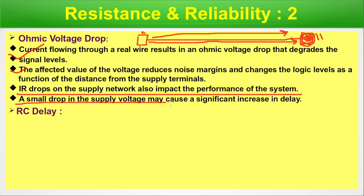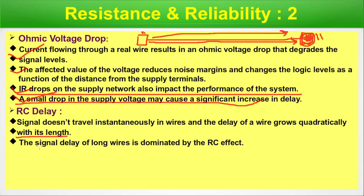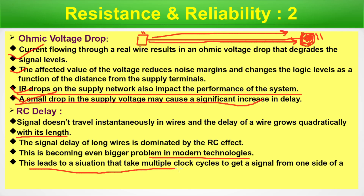The affected voltage level reduces noise margin and changes the logic level as a function of distance from supply terminals. IR drops on the supply network also impact system performance — a small drop in supply voltage may cause a significant increase in delay. RC delay: signals don't travel instantaneously in wires, and the delay of a wire grows quadratically with its length. The signal delay of long wires is dominated by the RC effect, which in modern technology can take multiple clock cycles to get a signal from one side of a chip to the other.